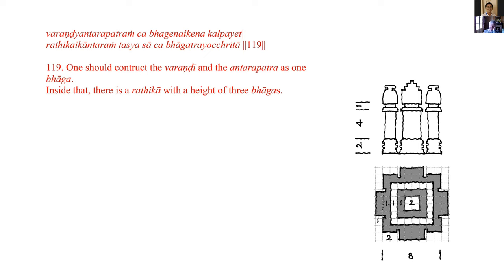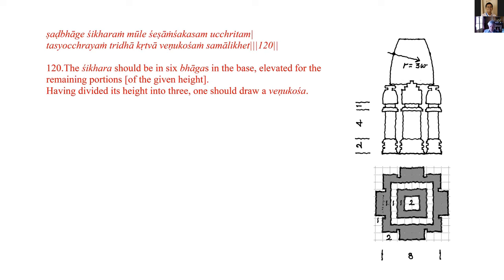On top of that there is a ratika with a height of three bhagas. In this text, ratika means the shringa — the little shikara crowning the pillar, which is the conceptual stambha in the wall. The badra, the central projection, has an udgama, a gavaksha pediment. Because it has to add up to five andakas: if I gave it another ura shringa we would have too many. The shikara should be six bhagas, elevated for whatever height remains.